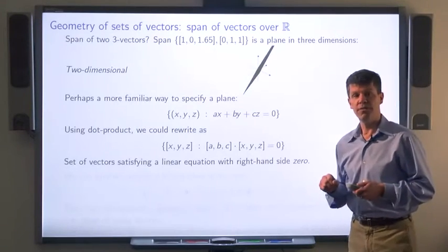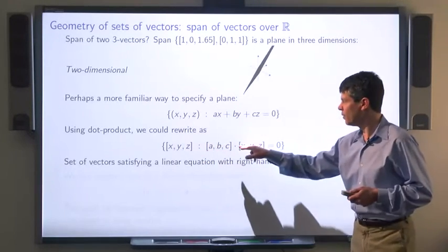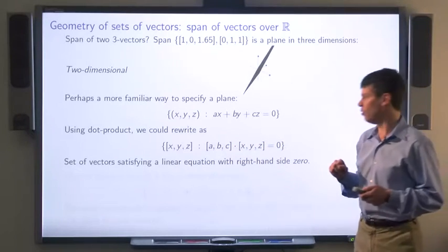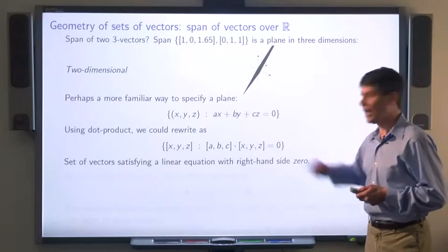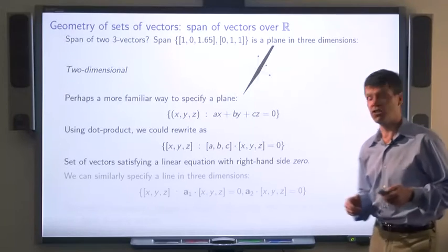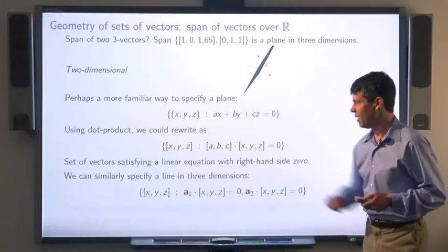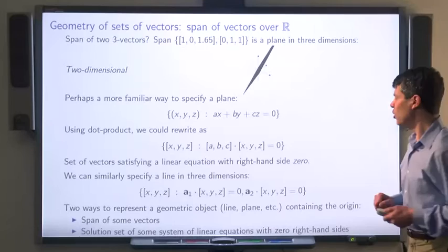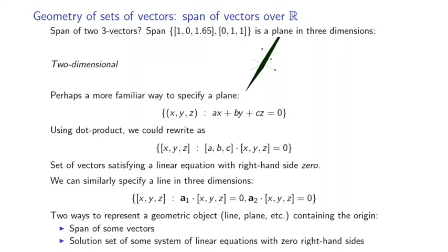We can use vectors to represent this same equation — the set of vectors x, y, z such that this dot product is equal to zero. So we're describing a set of vectors using a linear equation with the right-hand side of zero. We can similarly describe a line in three dimensions by using two equations with right-hand sides equal to zero. It seems we have two ways to represent a geometric object such as a line or a plane: as the span of some vectors, or as the solution set to a set of linear equations where the right-hand sides are zero.